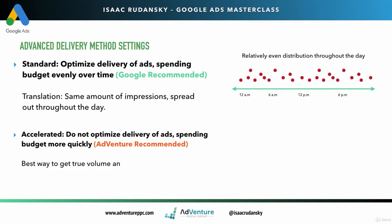If I choose accelerated delivery, I'm not optimizing the delivery of the ads, I'm spending my budget more quickly, getting them as soon as possible. That's what I recommend at Adventure Media. It's the best way to get true volume and project how much more impressions are available for your keywords.